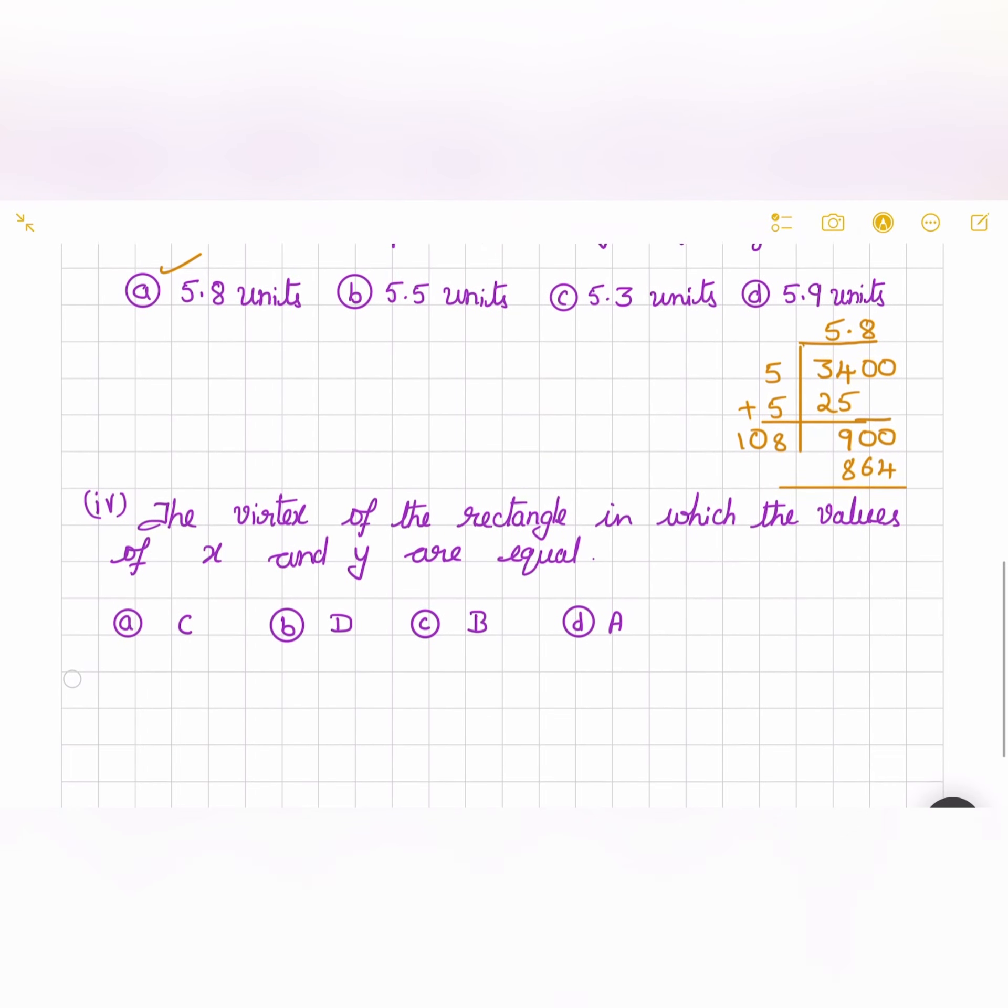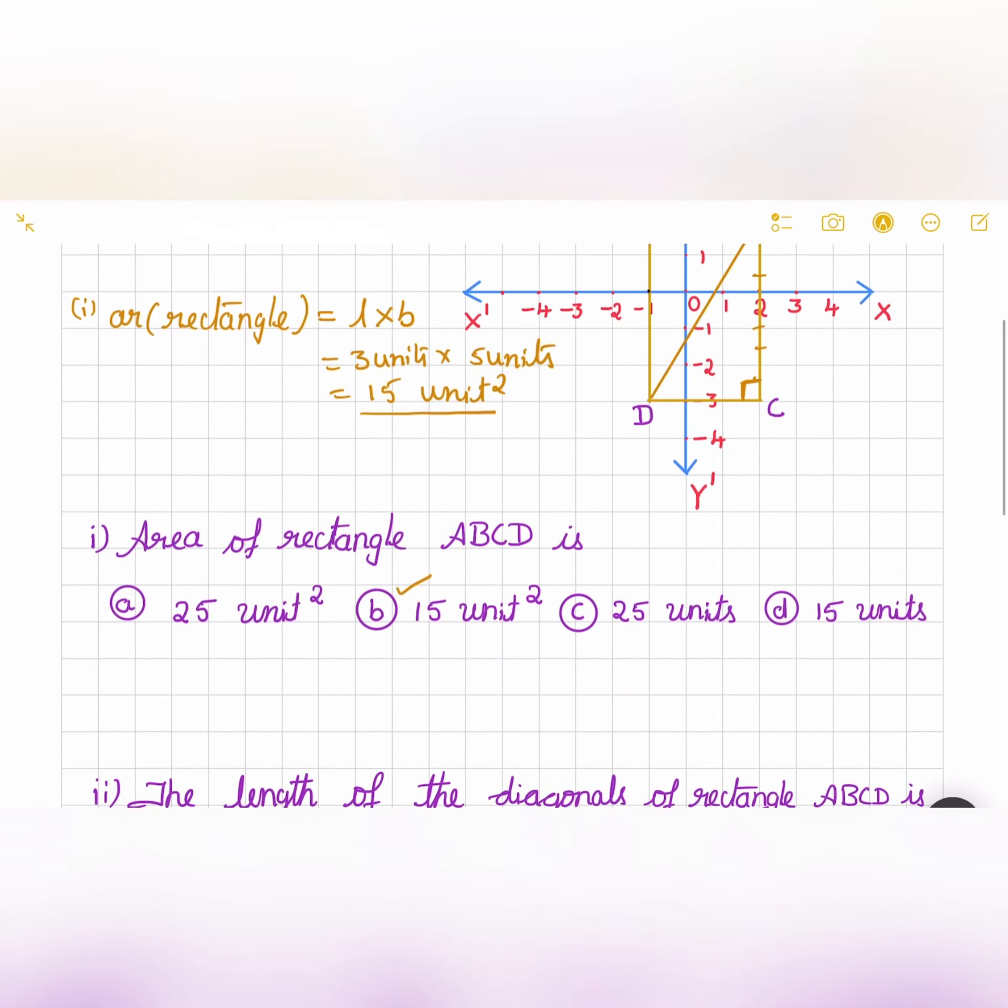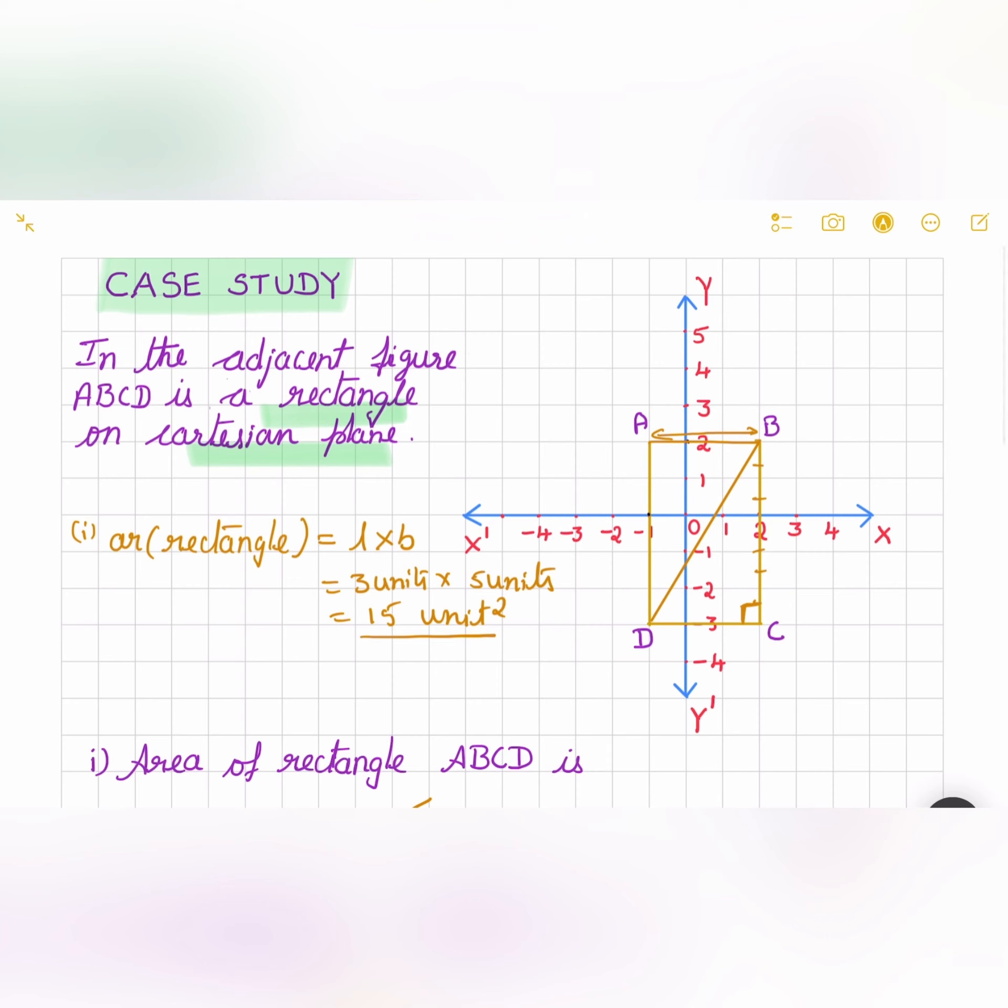Let us go for the fourth one. The vertex of the rectangle in which the values of x and y are equal. So in which vertex are the x and y values equal? And we will write down the coordinates of ABCD. Coordinate of A: x is minus 1 and y is 2. So minus 1 and 2. B: x is 2 and y is 2. So we have understood that this is B.